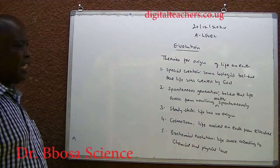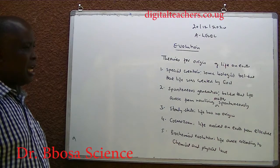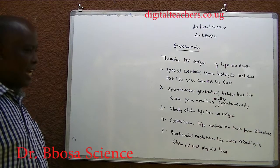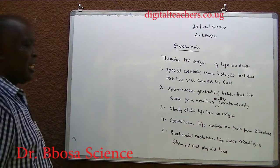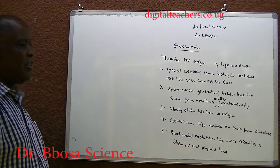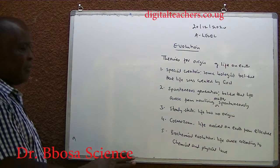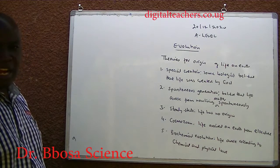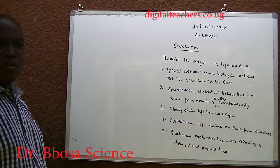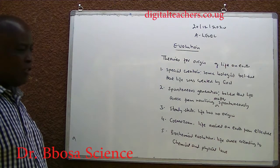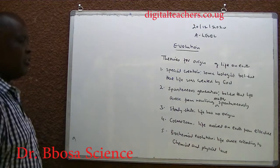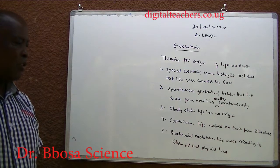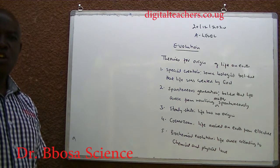Two, spontaneous generation: some people believe that life arose from non-living matter spontaneously. Three, celestial state: they believe that life has no origin. Four, cosmosian: the belief that life arrived on earth from somewhere else. Five, biochemical evolution: life arose according to chemical and physical laws.